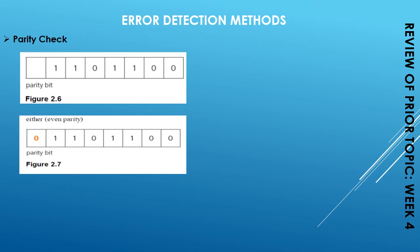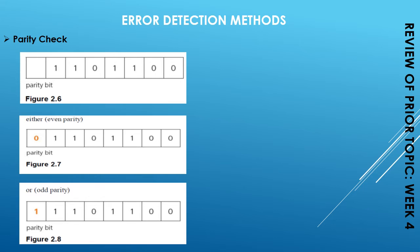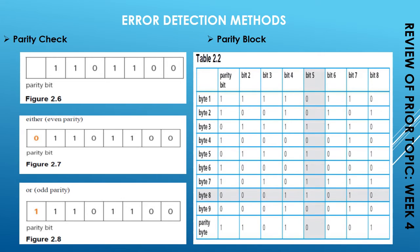In odd parity, if there are two, four, six, or eight ones, the parity bit is set to one. Parity bits can also be applied on a parity block. Table 2.2 is a thorough example of a parity block where data is present in the form of various bytes and at the start of each byte the parity bit is calculated.